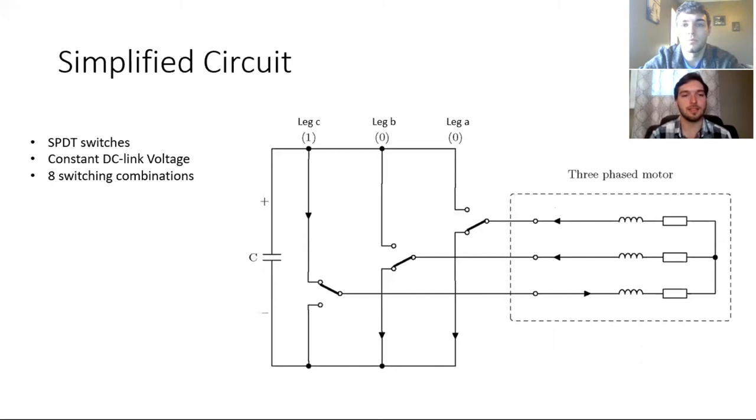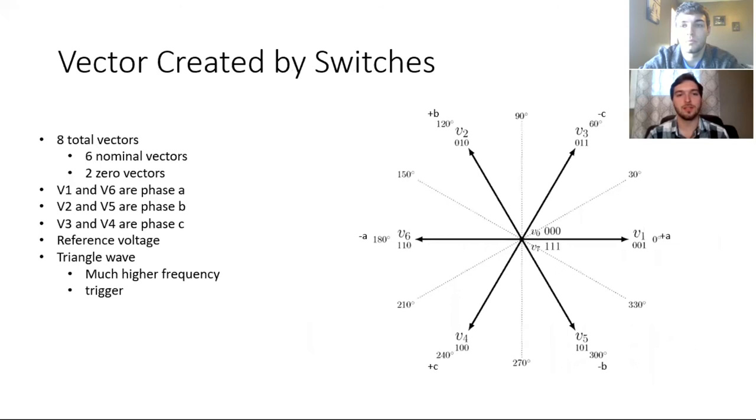On the next slide, you can simplify the circuit by stating that the DC link voltage is held constant which could remove the three-phase input and rectifier. And then for each leg could replace the transistors with one single pole double throw switch which just indicates whether or not the top transistor or the bottom transistor is active.